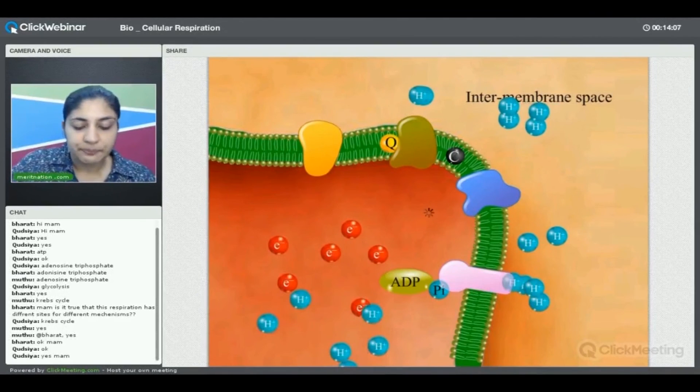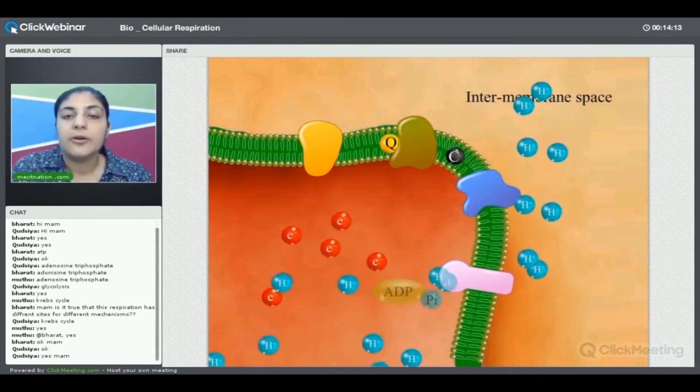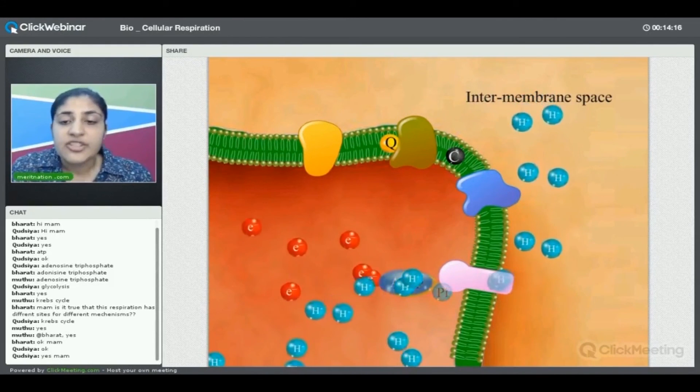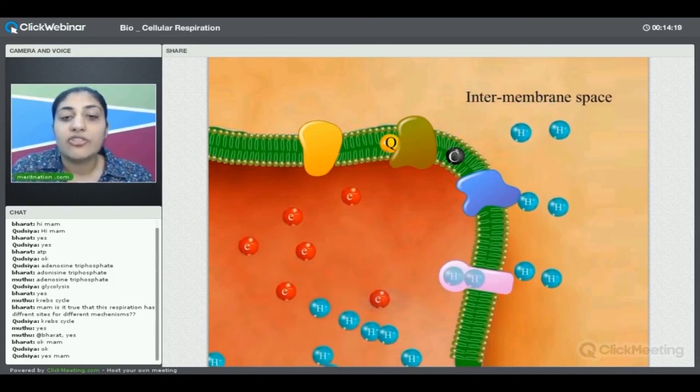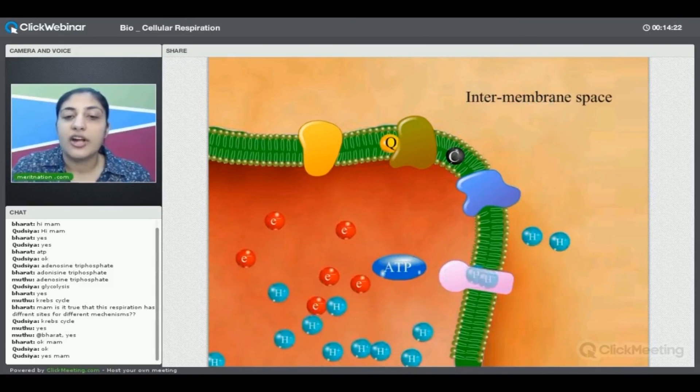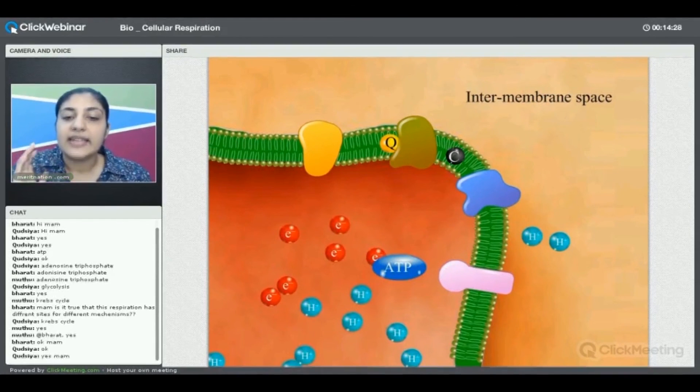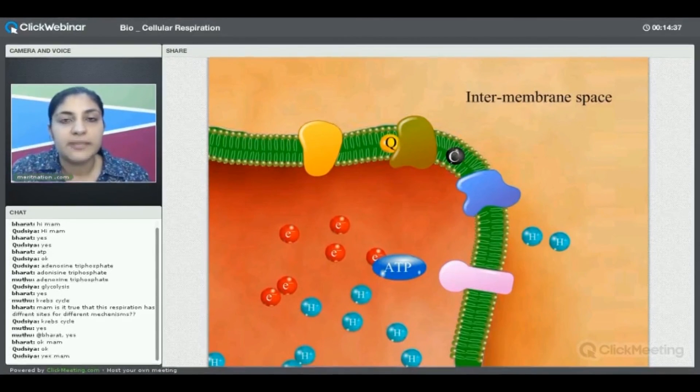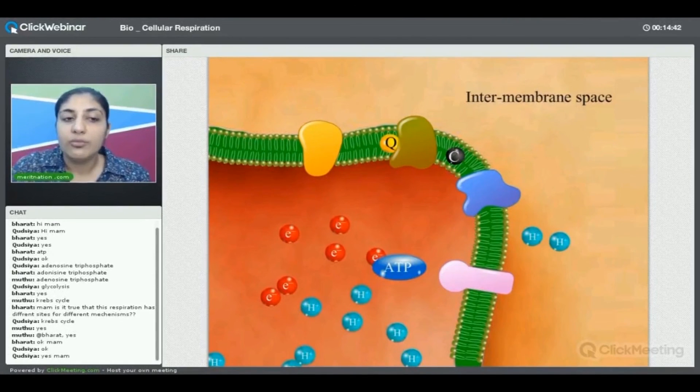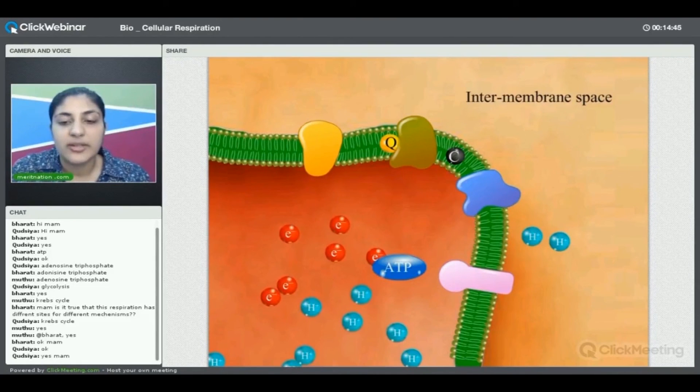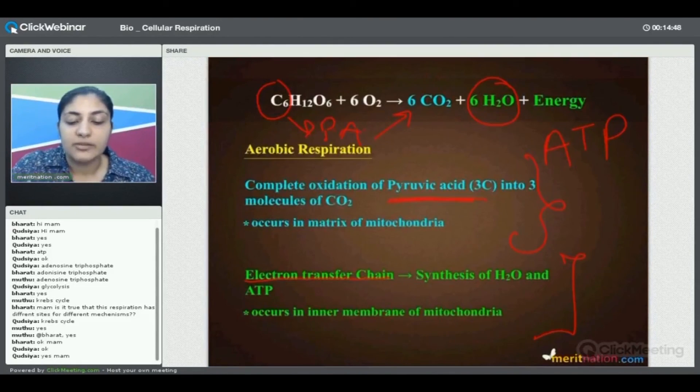As you can also see in the animation, every time these protons are being pumped back we have ATP being released. This is what happens in the electron transport chain: electrons are transported from one molecule to the second molecule, second molecule to the third molecule. At each time, the energy released in this reaction is taken for pumping protons from the matrix region towards the intermembrane space. After that, that gradient that is formed, when it moves the protons back toward the matrix region, we get formation of ATP molecules.